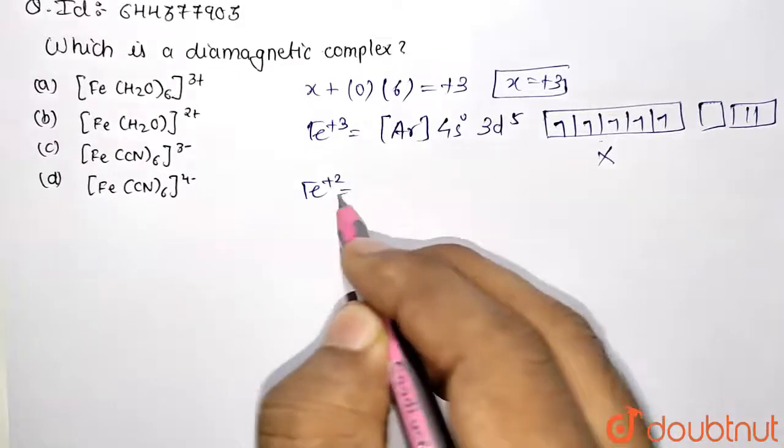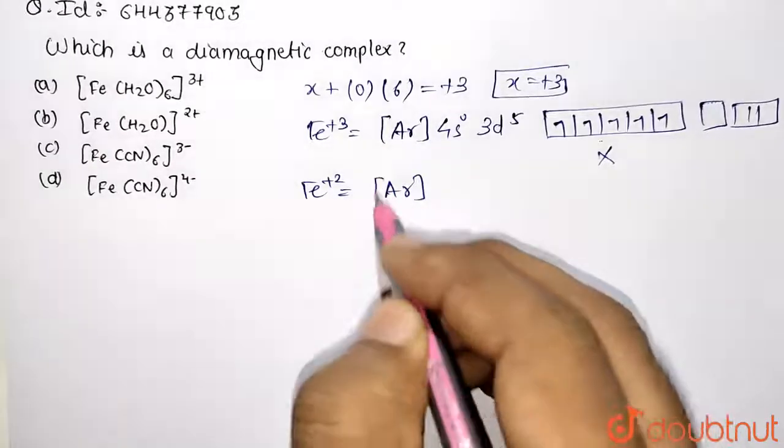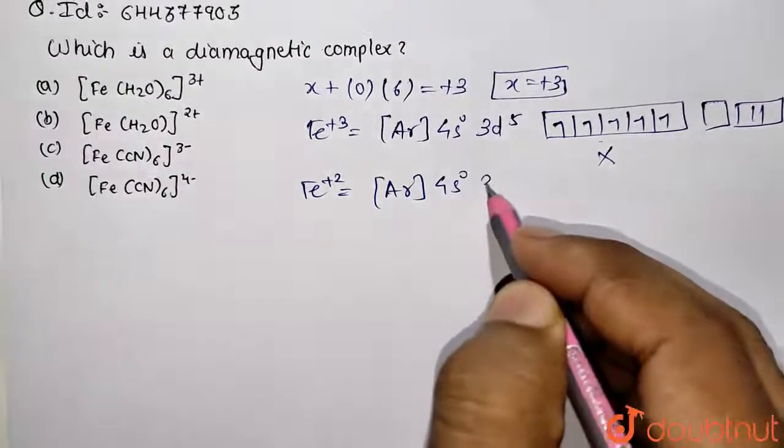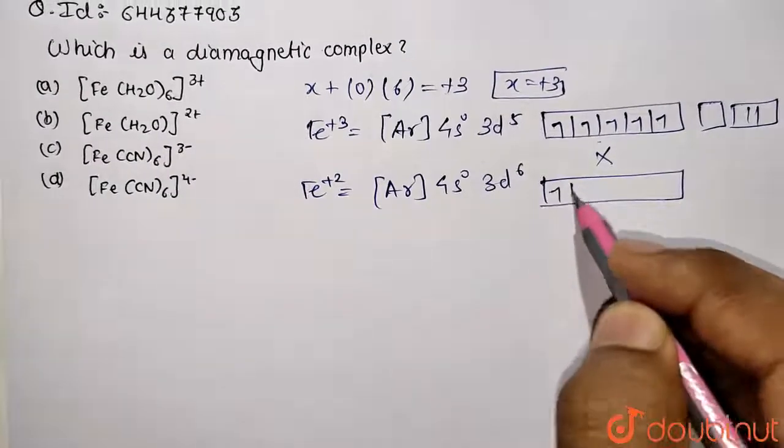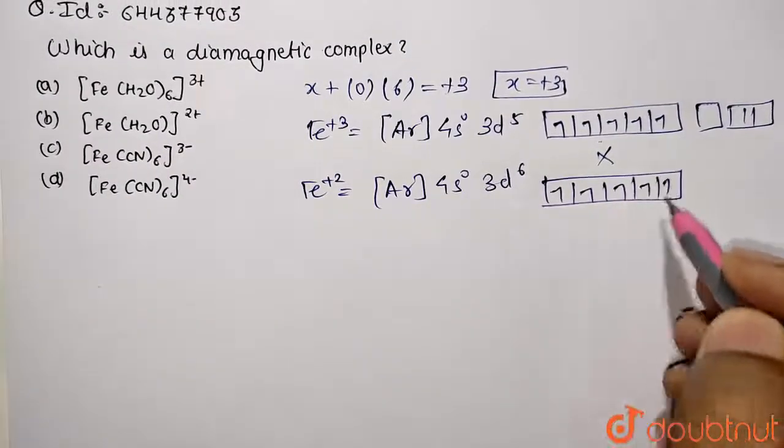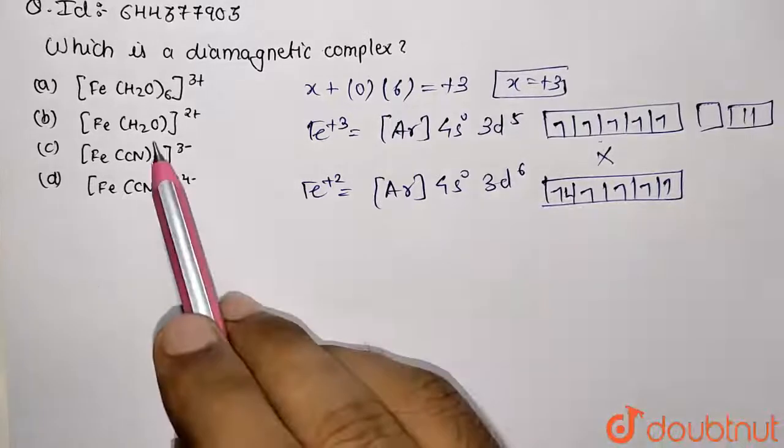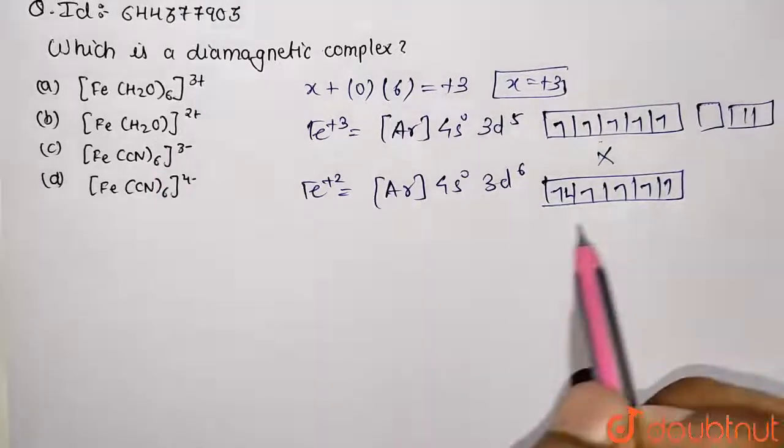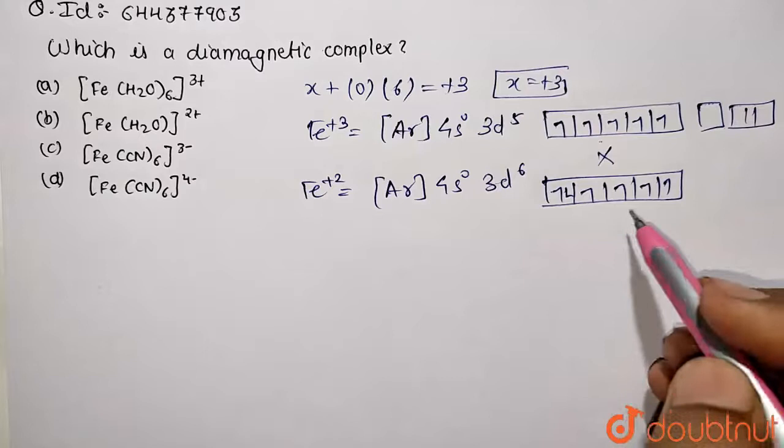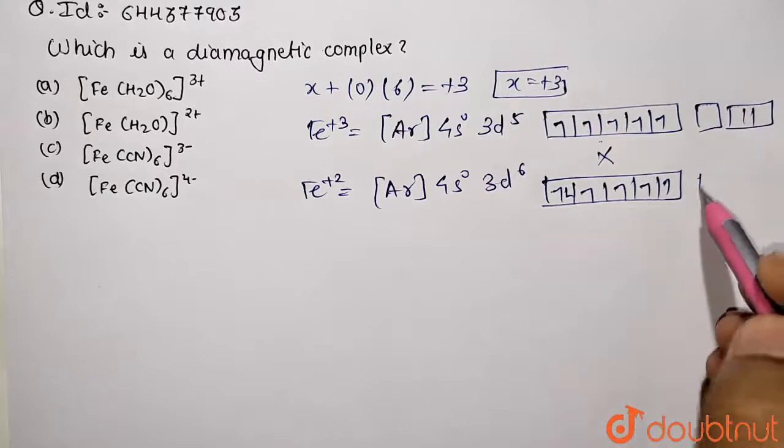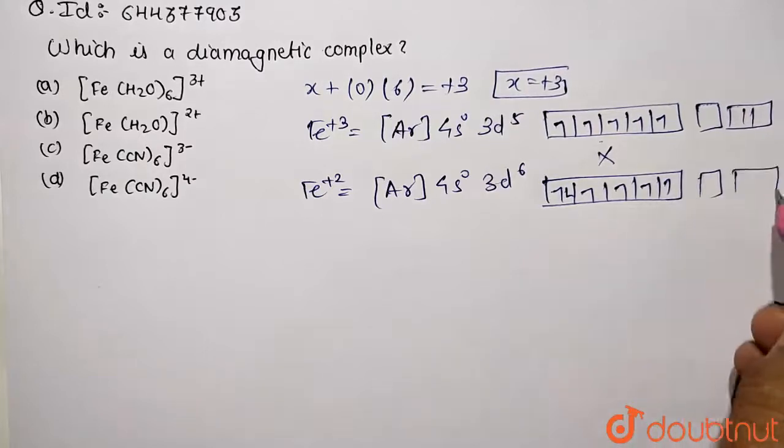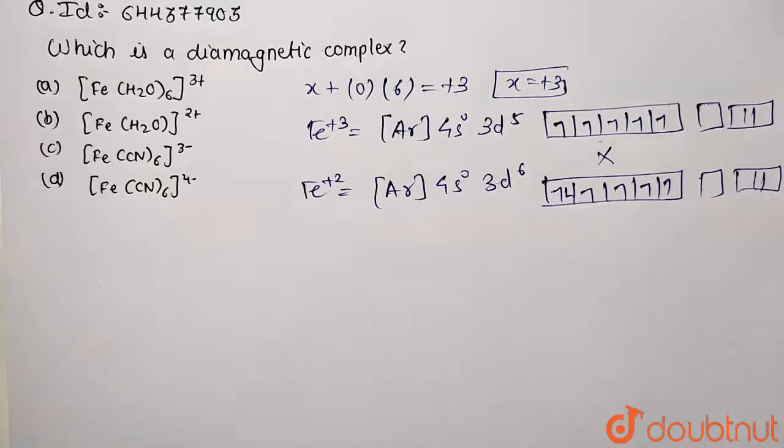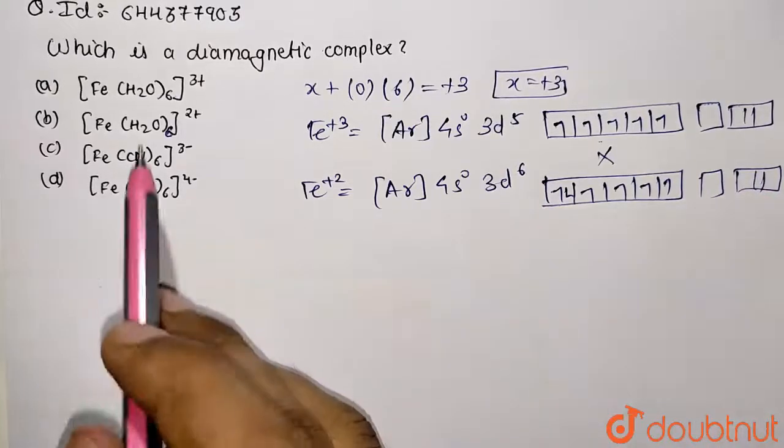So how it's going to show? It's going to be 4s will be zero and we are left with only 3d6. So how you can represent six: one, two, three, four, five and this will be six. Here also it's going to be weak field so no pairing will be involved and this is going to be similarly a paramagnetic complex.